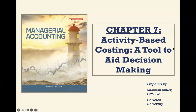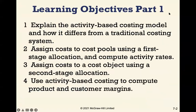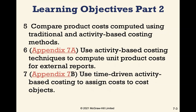Today we're talking about activity-based costing — what it is and how it differs from traditional costing systems. We'll cover how to assign costs to cost pools using first stage allocation to compute activity rates, assigning costs to a cost object using second stage allocation, computing product and customer margins, comparing product costs under traditional and activity-based costing methods, and using time-driven activity-based costing.